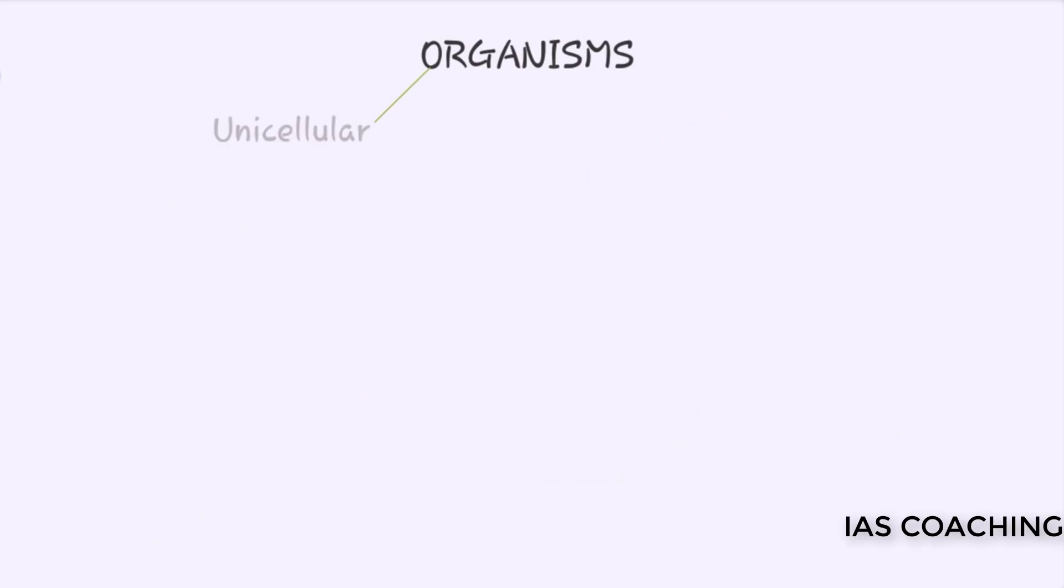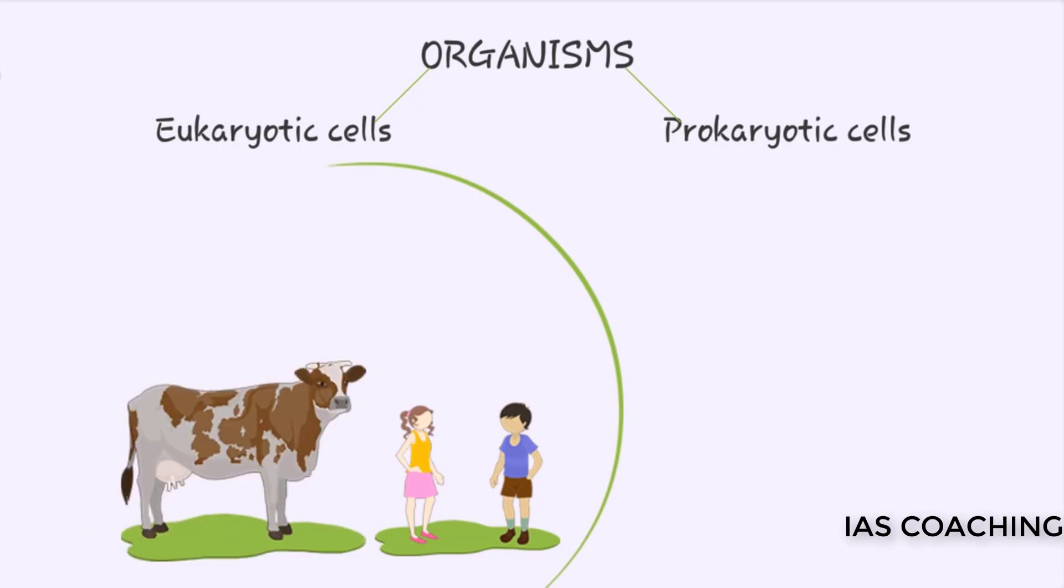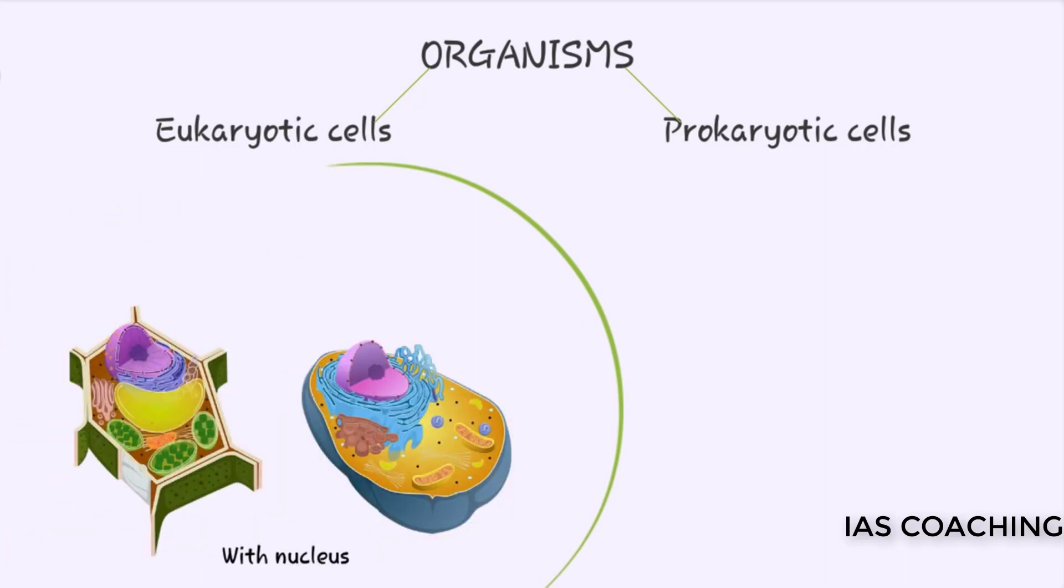We have seen that an organism can be unicellular or multicellular depending upon the number of cells it has. Another way to classify organisms is differentiating by whether their cells are eukaryotic or prokaryotic. Living organisms like human beings, animals and plants have cells with a well-defined nucleus and nuclear membrane. These are called eukaryotic cells.